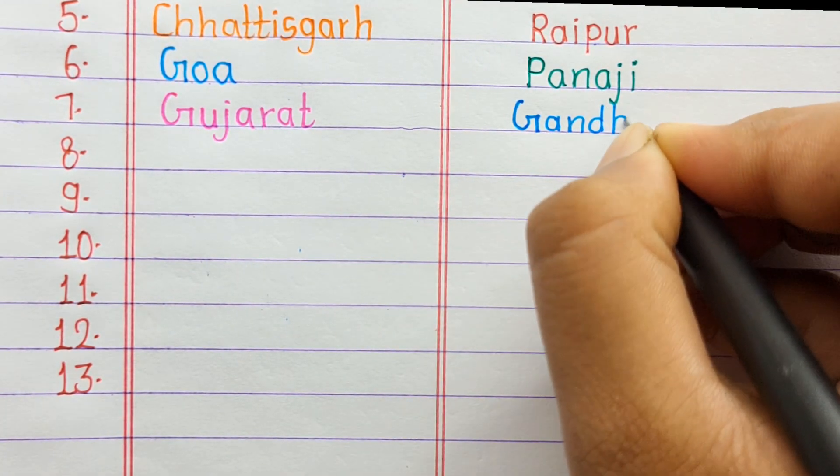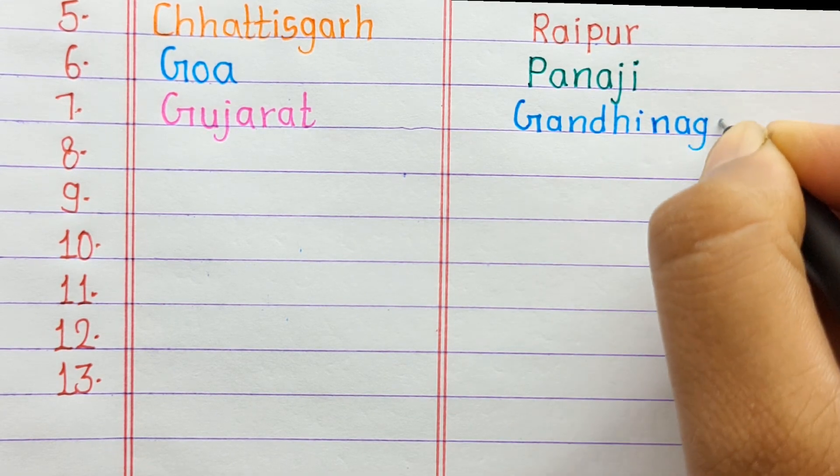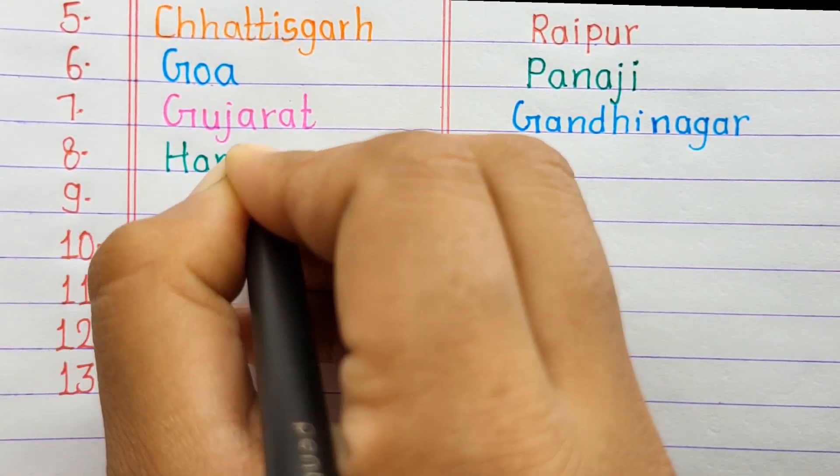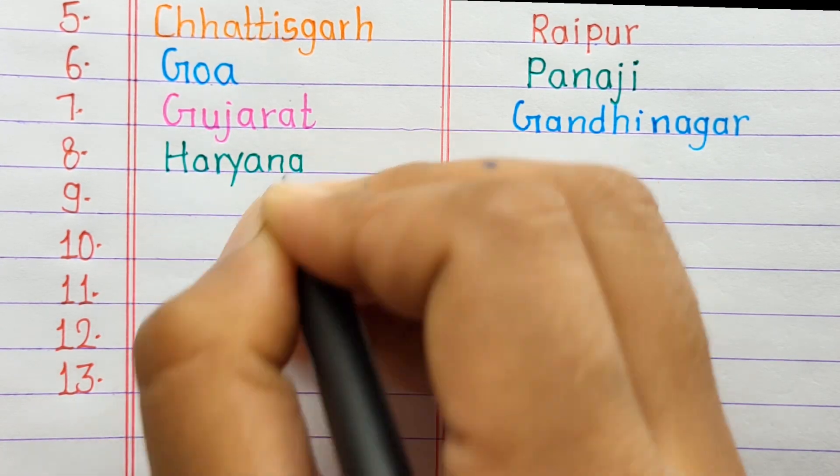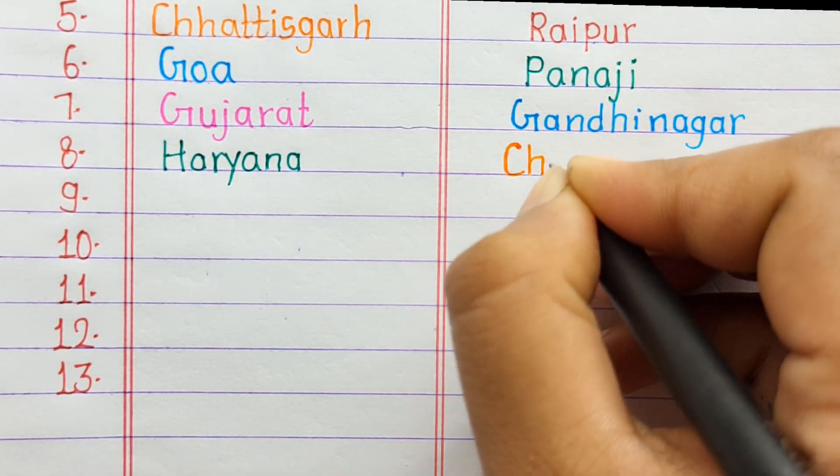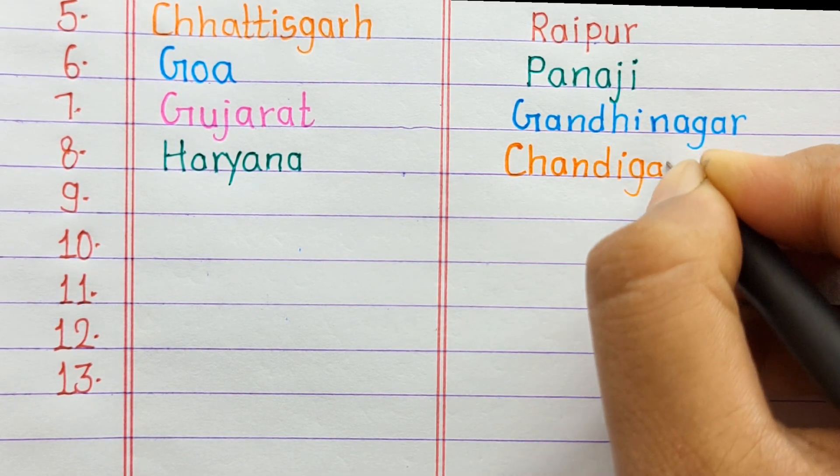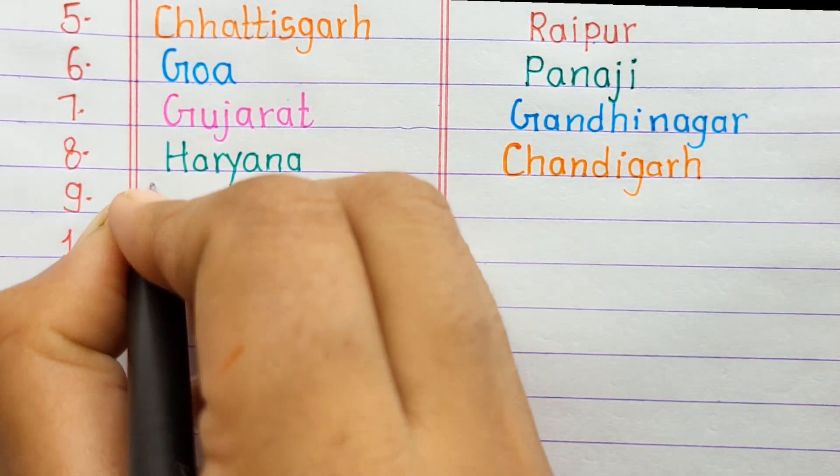Number 7. Gujarat, Gandhinagar. Number 8. Haryana, Chandigarh.